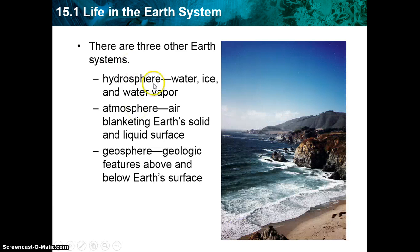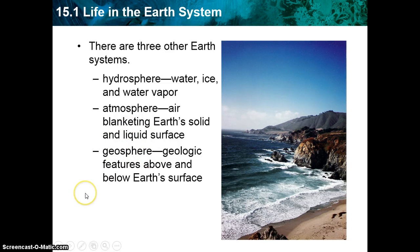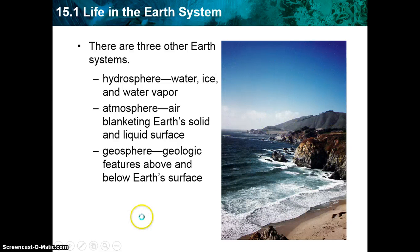The hydrosphere is the water ball, which includes water, ice, and water vapor. The atmosphere is the air that goes around the Earth's solid and liquid surfaces. The geosphere includes the geological features above and below the surface of the Earth. This picture shows all three of those — the hydrosphere, the atmosphere, and the geosphere.